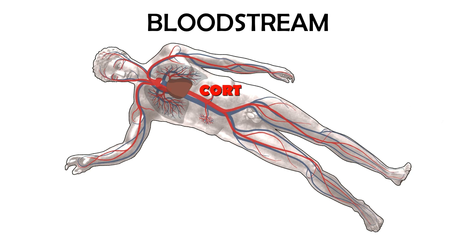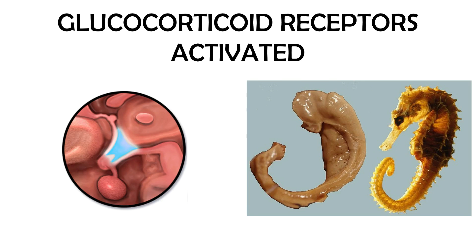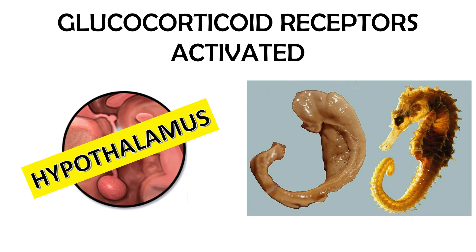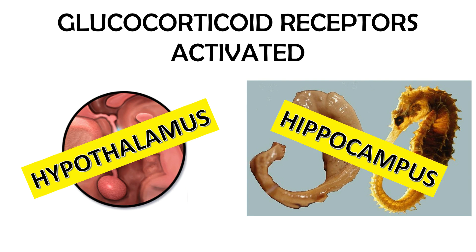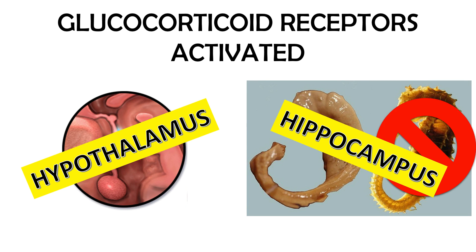Cortisol travels through the bloodstream back to the brain. Glucocorticoid receptors in the hypothalamus and hippocampus are activated. Not the seahorse — the brain part. The brain part is named after the seahorse.